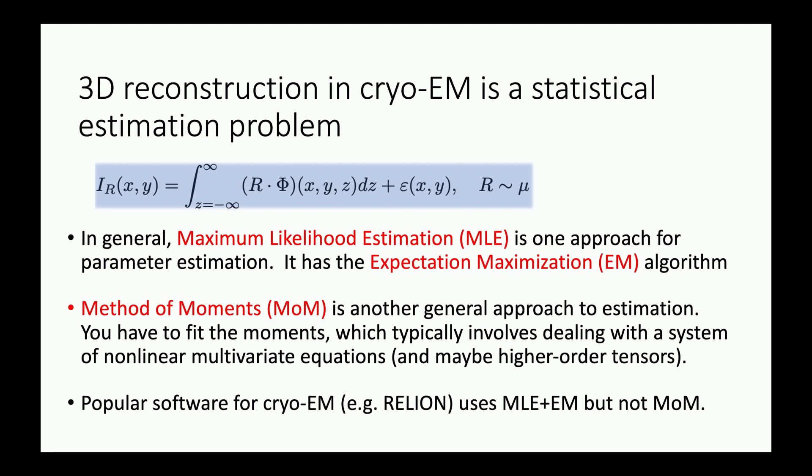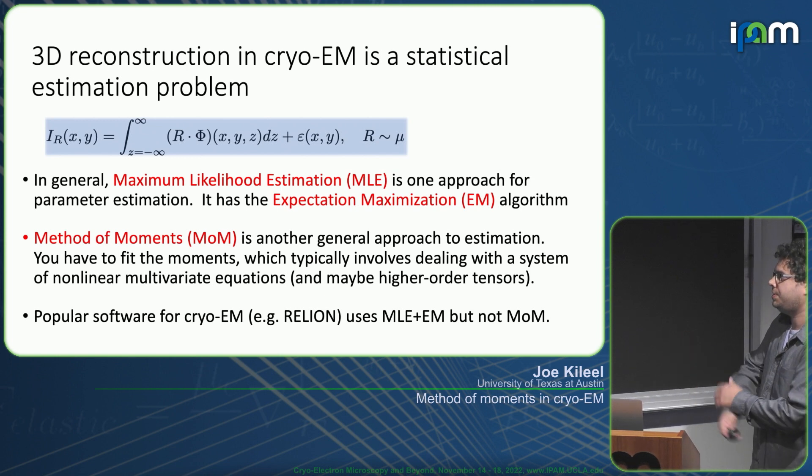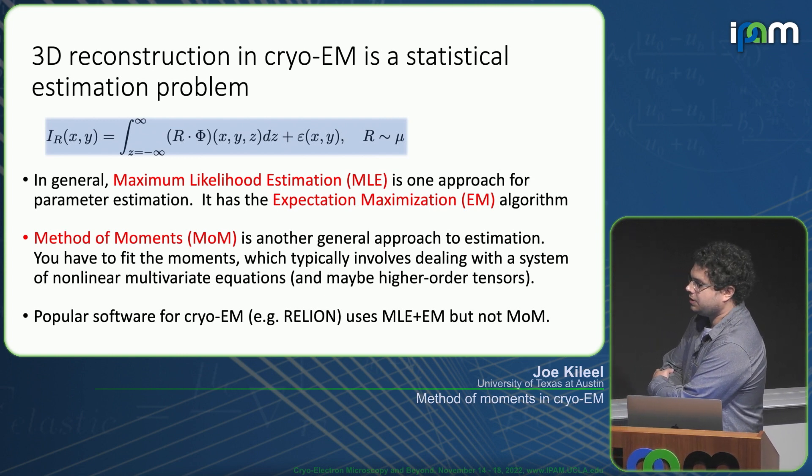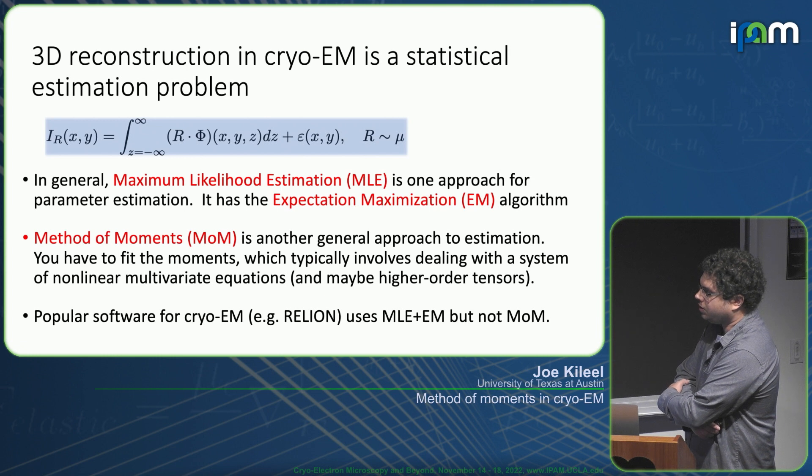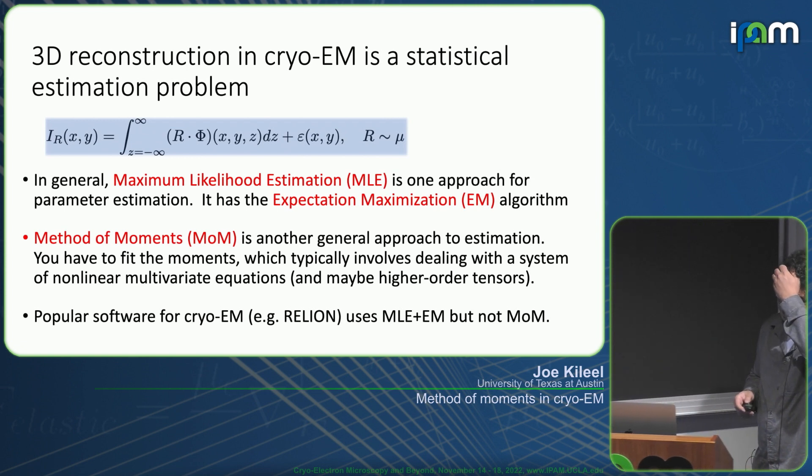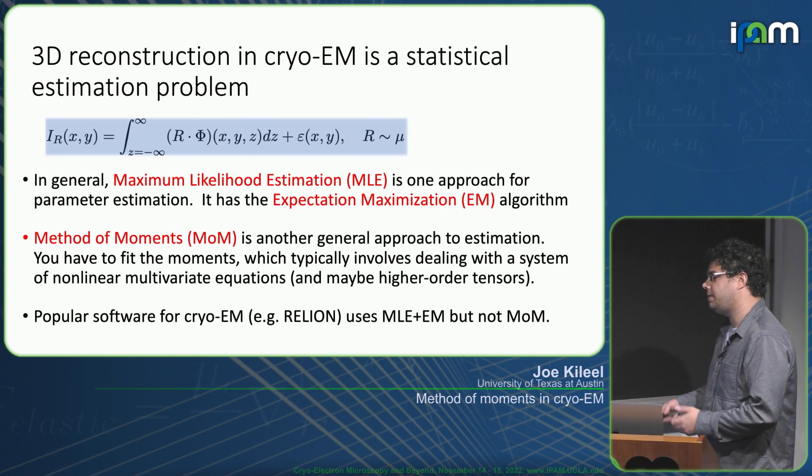3D reconstruction I'll view here as a statistical estimation problem. We're trying to estimate phi given various observations of the form I sub R. The randomness comes in the noise epsilon and the rotation R. In general, in statistics, there are two main strategies for parameter estimation.